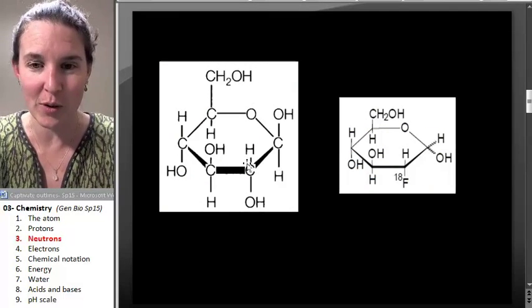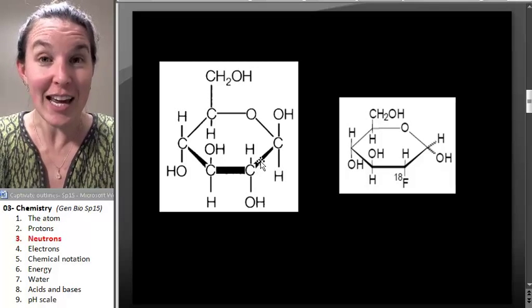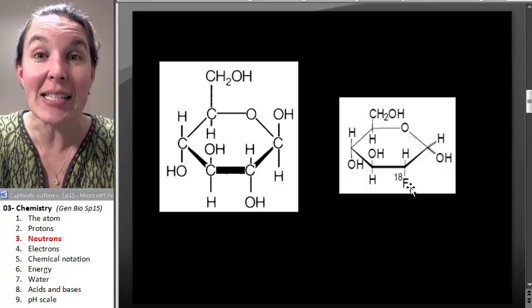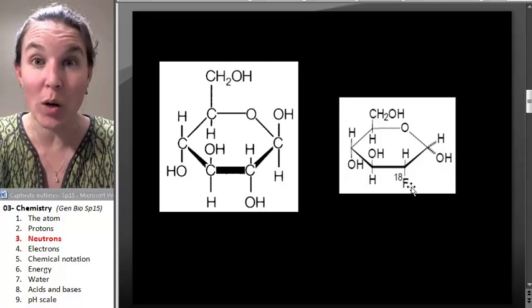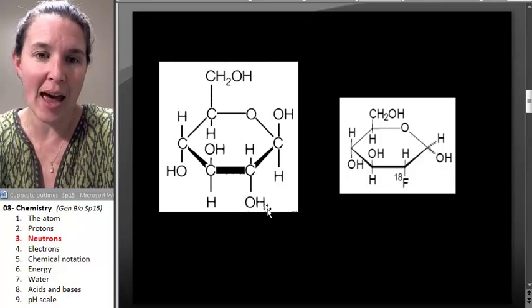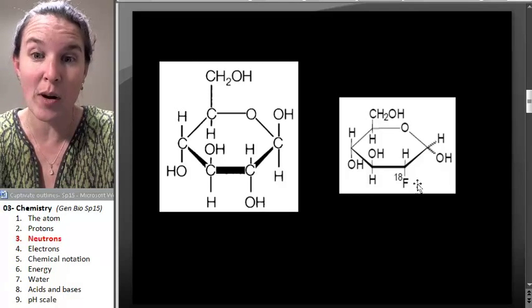This is a glucose molecule. They take glucose and then they attach an unstable isotope of fluorine, which is another atom. Instead of having, here normally they have an oxygen attached at this point.